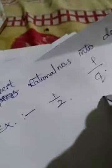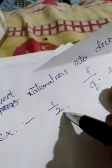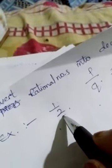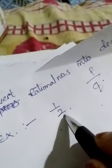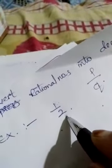I am taking one rational number as an example — that is 1 by 2. 1 by 2 is in P by Q form, and 2 is not equal to 0, so it is a rational number. In 1 by 2, 1 is the numerator and 2 is the denominator. The numerator is divided by the denominator.